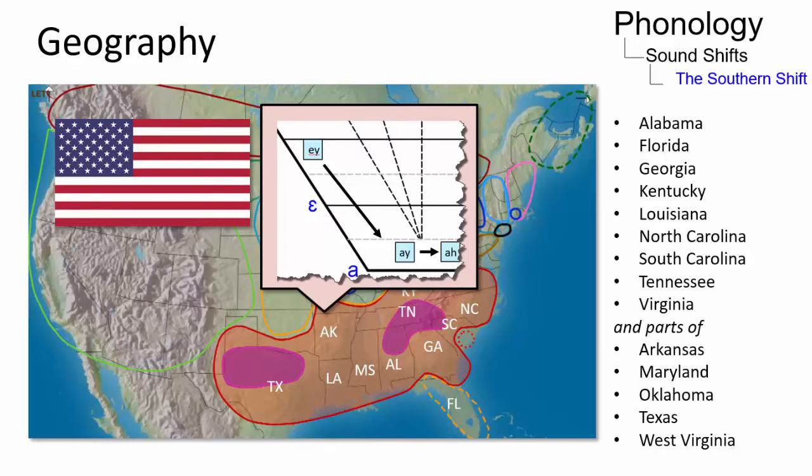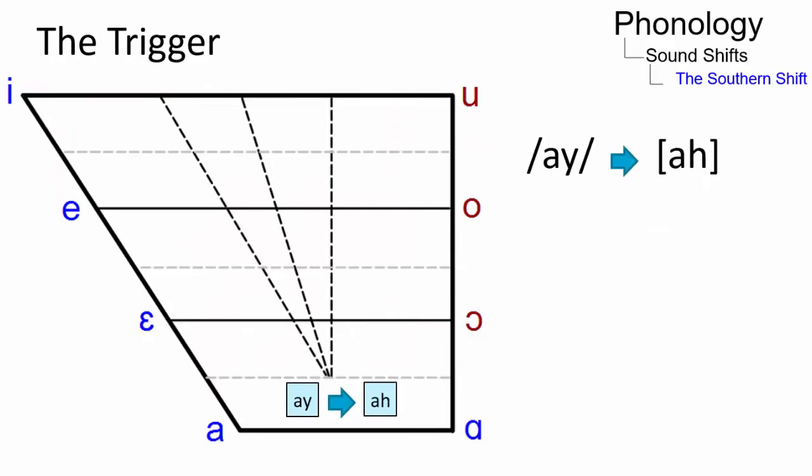In most of these states, the triggering movement is a monophthongization of I, with the result that words like hide or rise sound more like hard or ras.